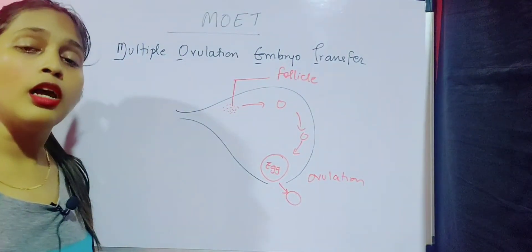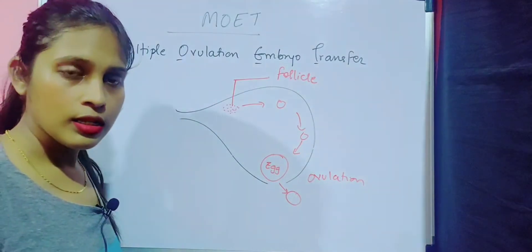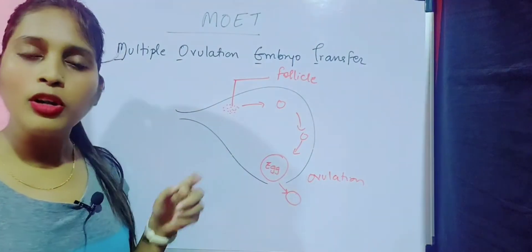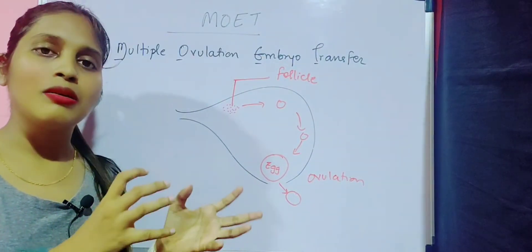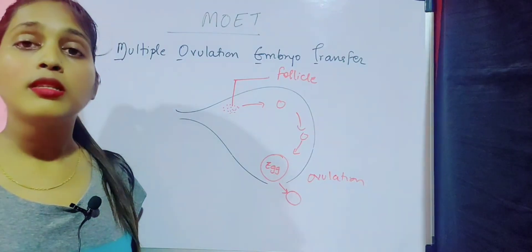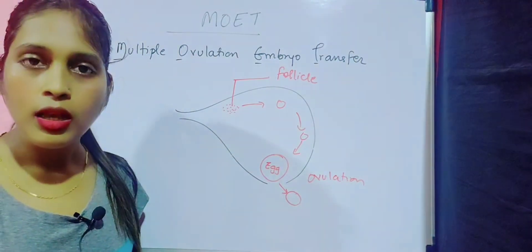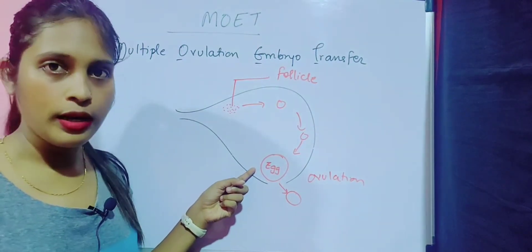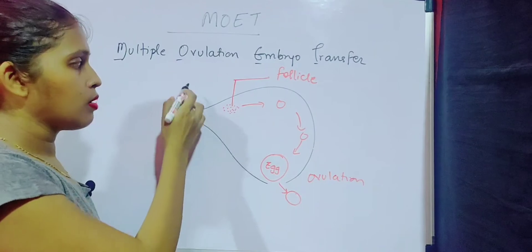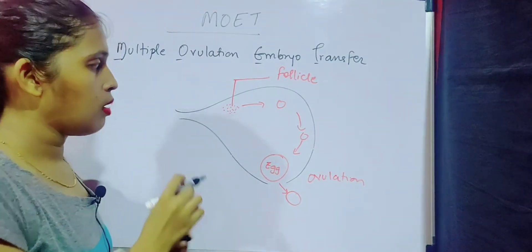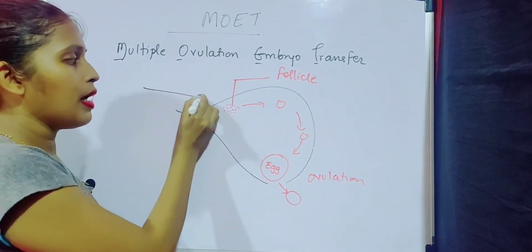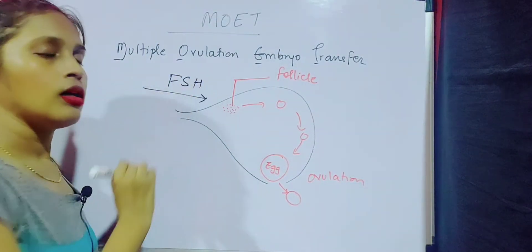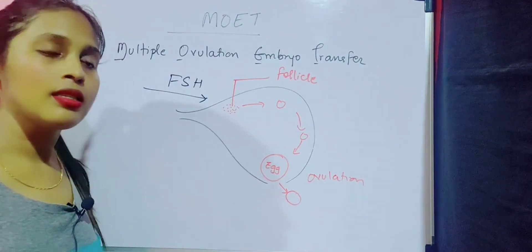Now we need to talk about how we are going to increase our progeny. The idea behind it involves the follicle. What we are going to do is administer that particular female with some hormonal injections, and those injections will help her to produce more than one egg.